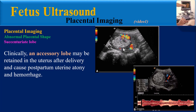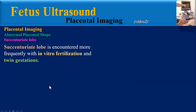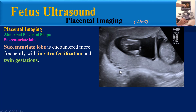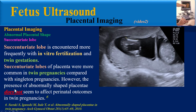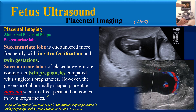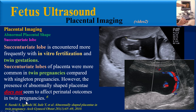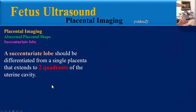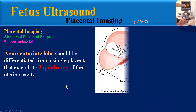This transabdominal transverse scan nine days postpartum shows retained placental tissue seen as an echogenic mass, with low-resistance blood flow on one side of the mass. Succenturiate lobe is encountered more frequently with in vitro fertilization and twin gestations. One study showed that succenturiate lobes were more common in twin pregnancies compared with singleton pregnancies; however, the presence of an abnormally shaped placenta does not seem to affect prenatal outcomes in twin pregnancies.